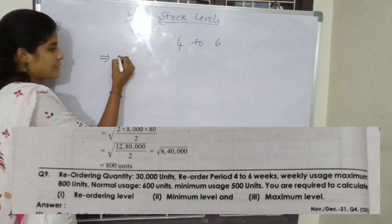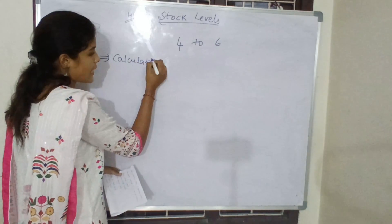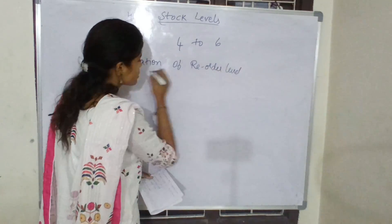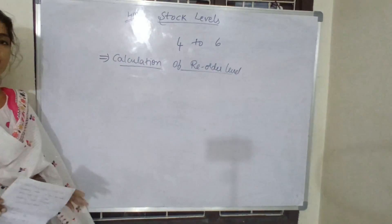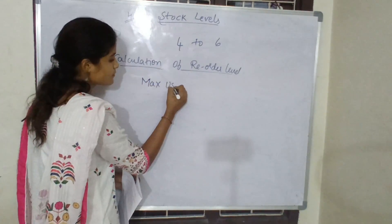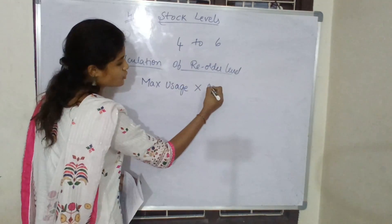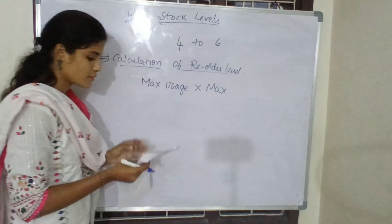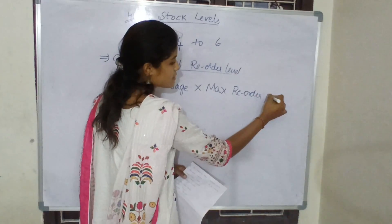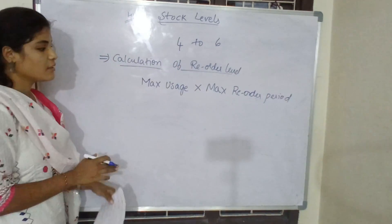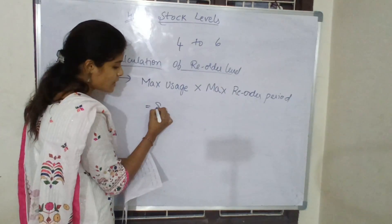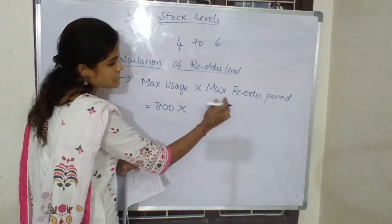First we will do the calculation of reorder level. You need to remember the formula. What is the formula of reorder level? That is maximum usage into maximum reorder period. This is the formula of reorder level. In the question, what is the maximum usage they have given? 800 into maximum reorder period.